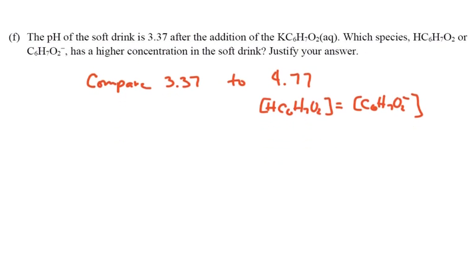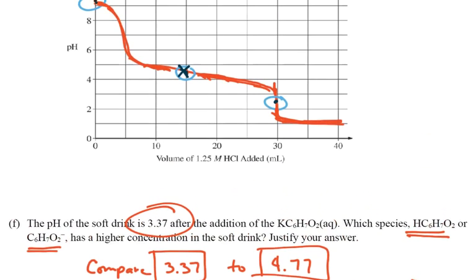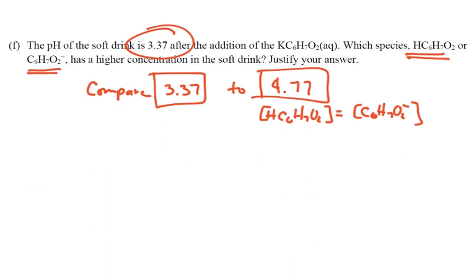Part F: The pH of the soft drink turns out to be 3.37 after the addition of the potassium sorbate. Which species—the sorbic acid or the sorbate—has a higher concentration? To do this, we're going to say, here's 3.37, we have to compare to the 4.77. 4.77 was the halfway point right here, where at that point we know the two species are equal to each other—that's where the sorbic acid and the sorbate are equal.